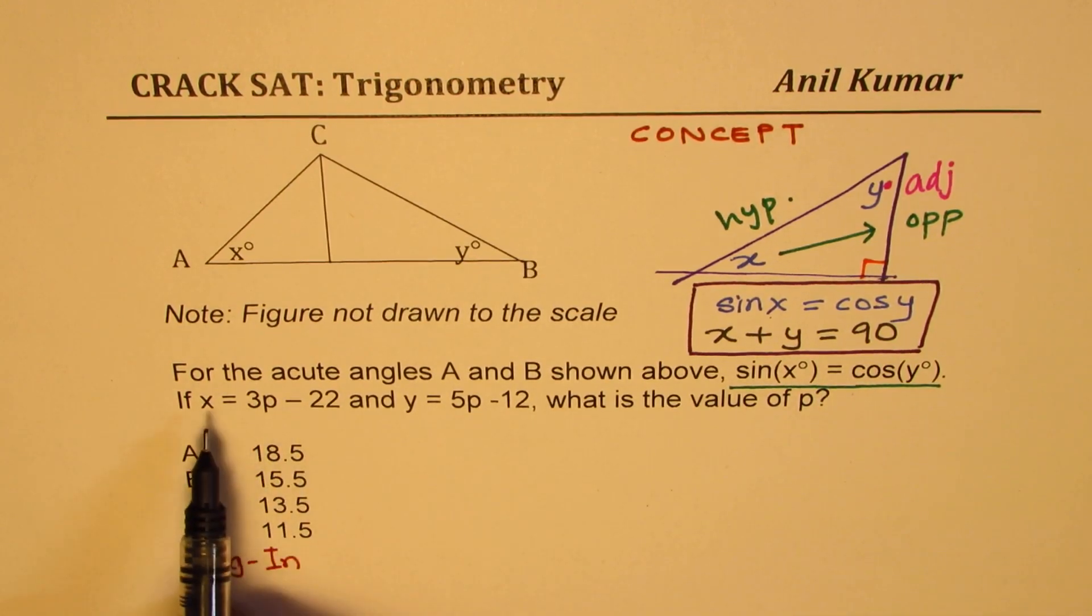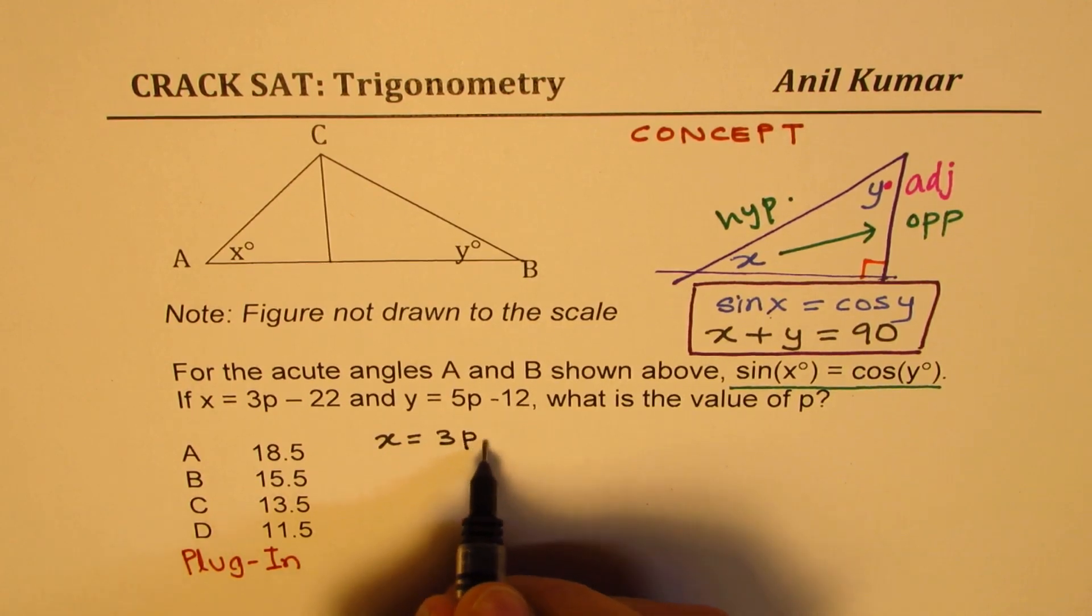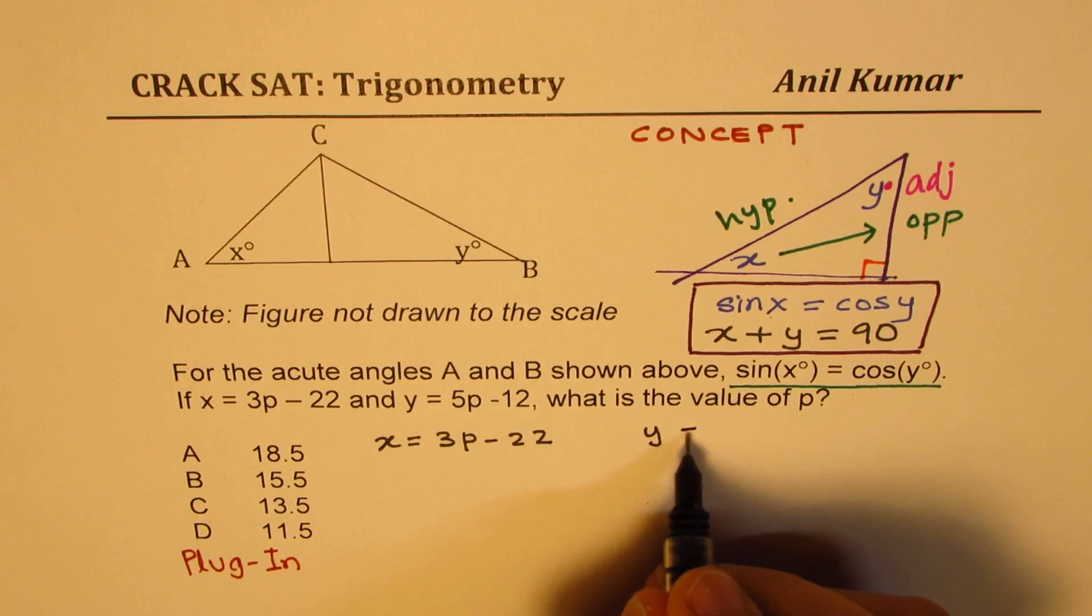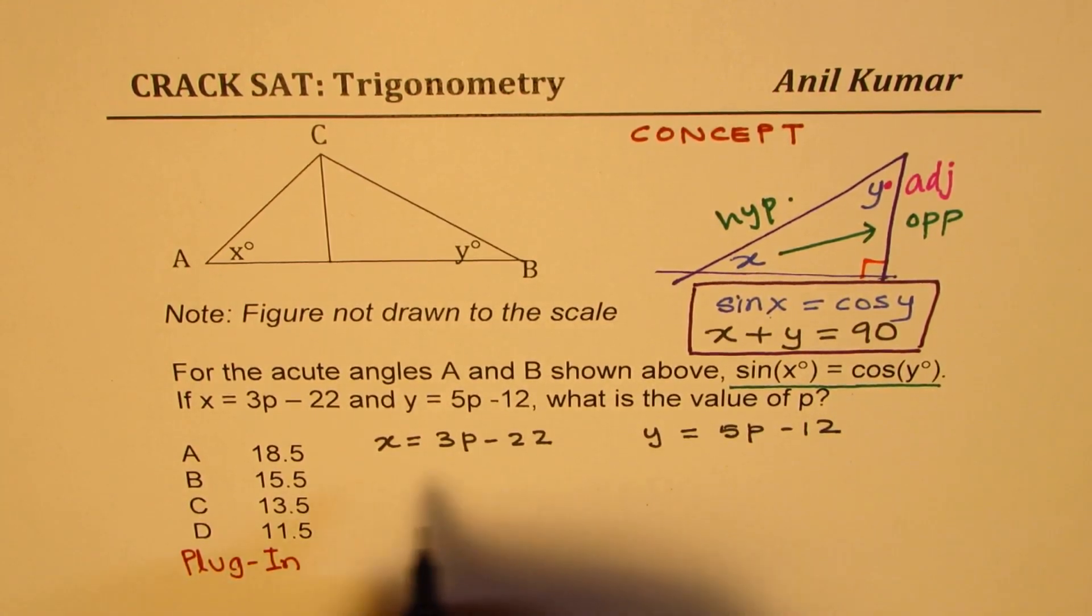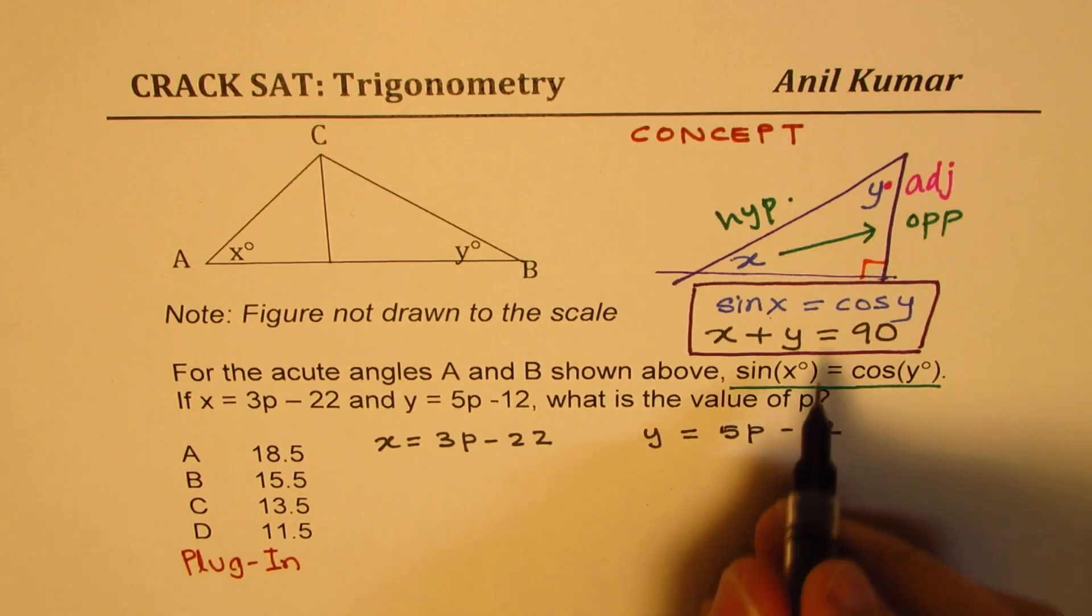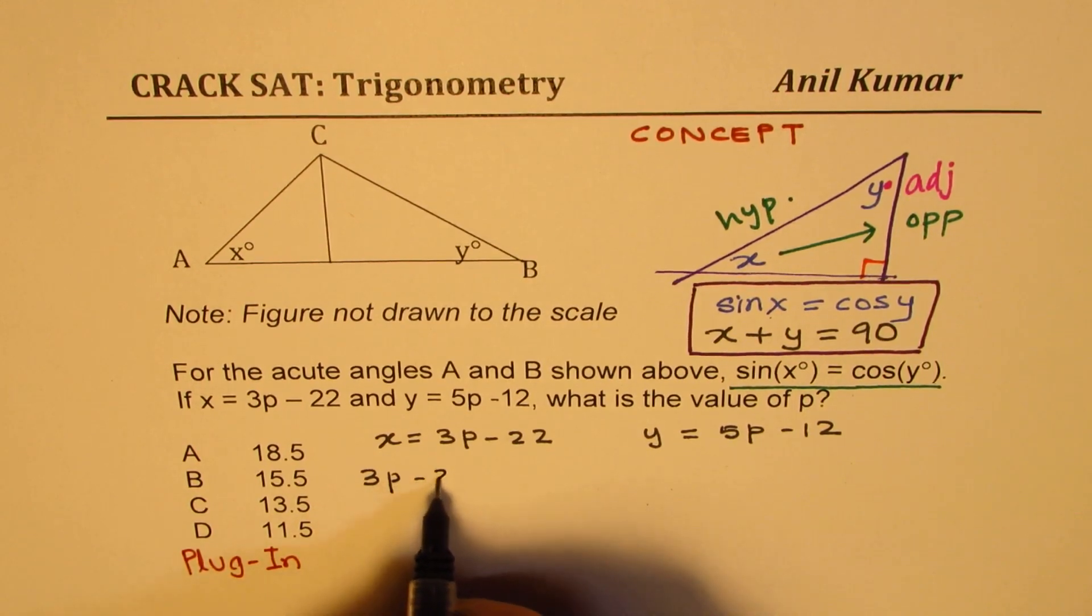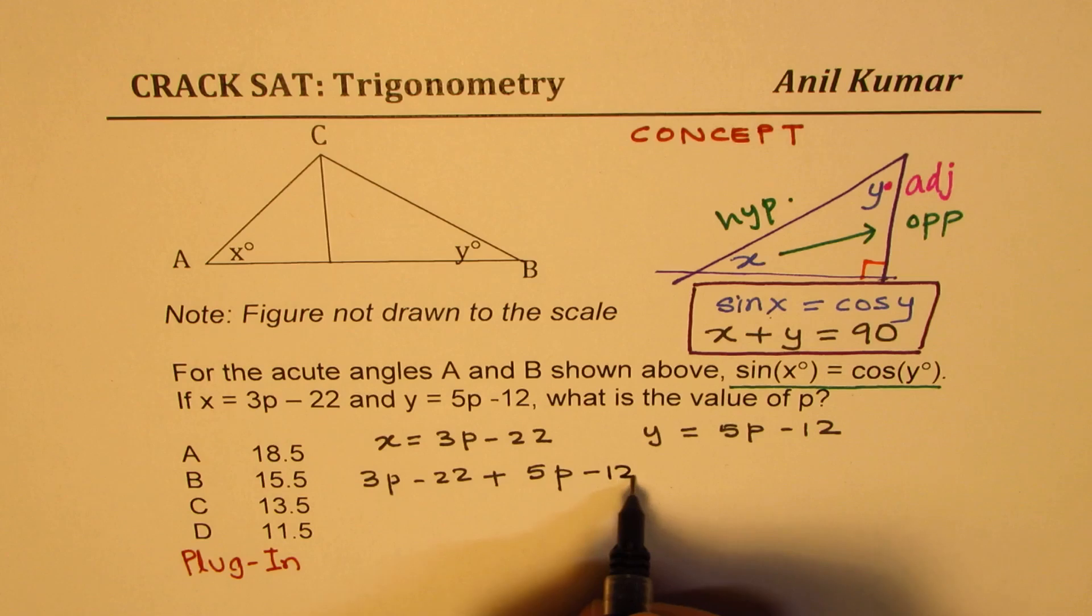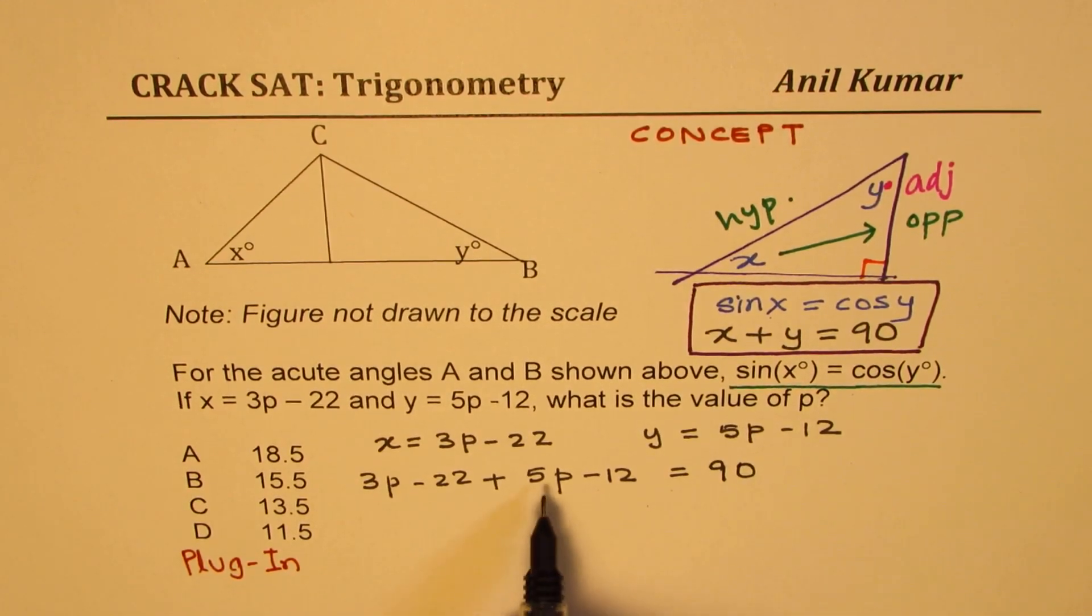So when you have this kind of equation which says sine x equals cosine y, remember x plus y is 90, perfect. Now once you know this, this is your basic concept. Then see how easy it becomes to solve this question. So we are given x as equal to 3p minus 22, and we are given y as equals to 5p minus 12.